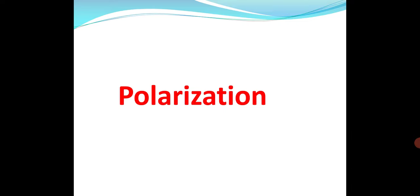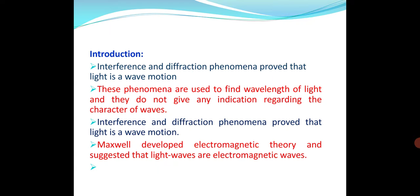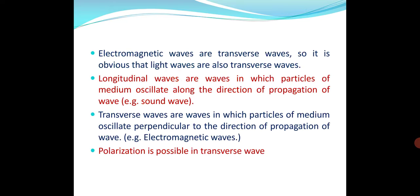In previous videos, we had learned about interference, electromagnetic waves, and how these are oscillating. Interference and diffraction phenomena proved that light is a wave motion. These phenomena are used to find the wavelength of light, and they do not give any indication regarding the character of wave.